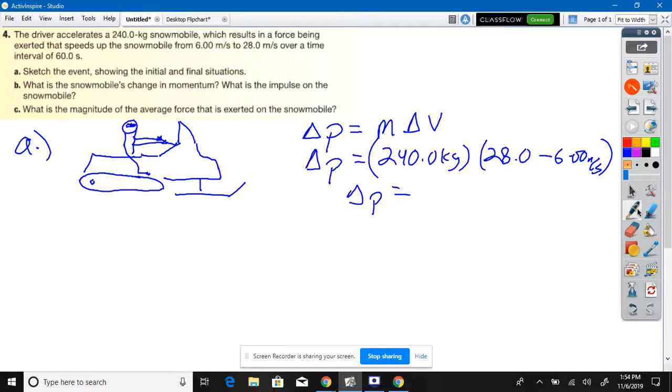Change in momentum is 240 times 28 minus 6.00 meters. Okay, what'd you guys get for that? 22 times 240, that's 5,280.